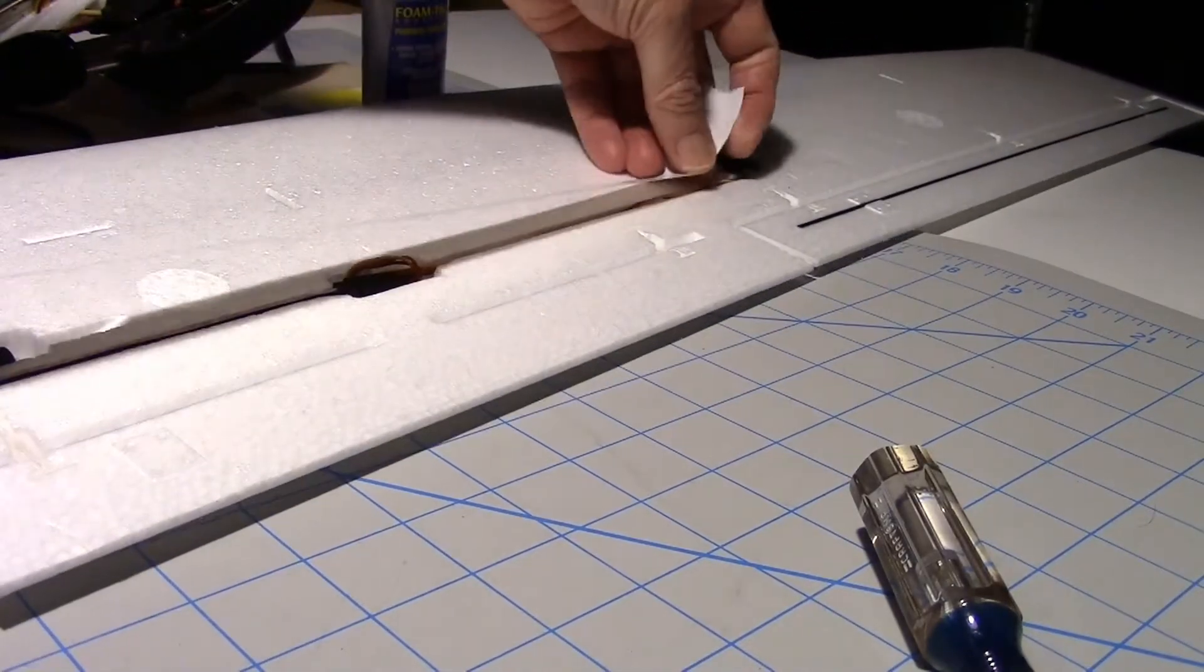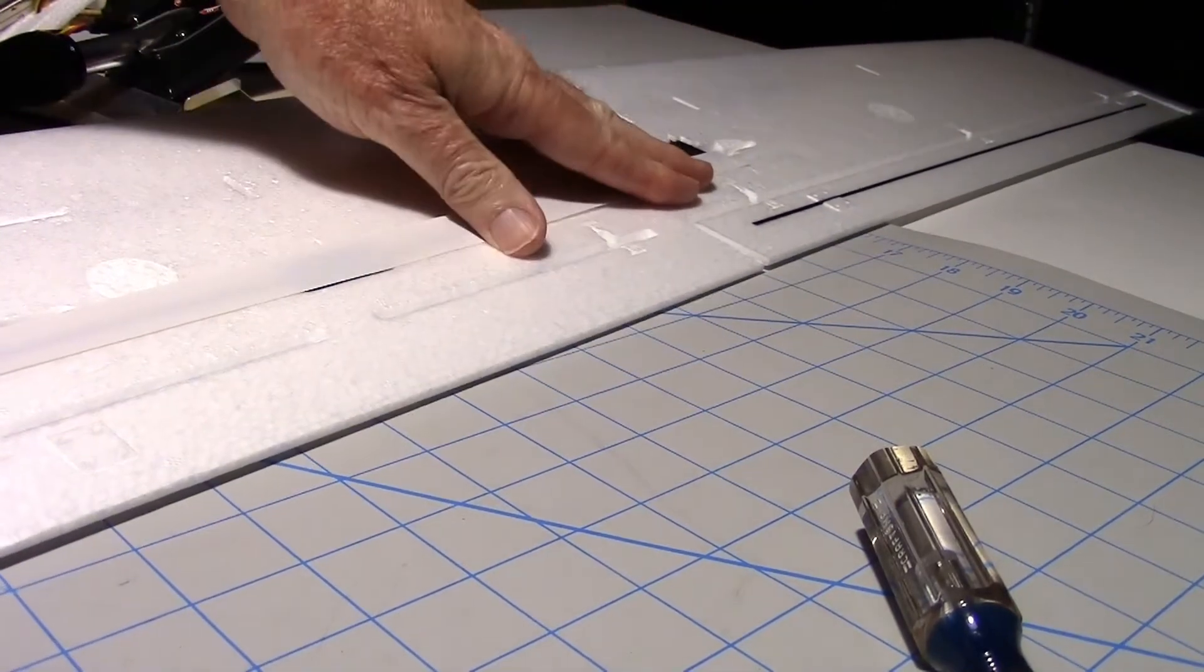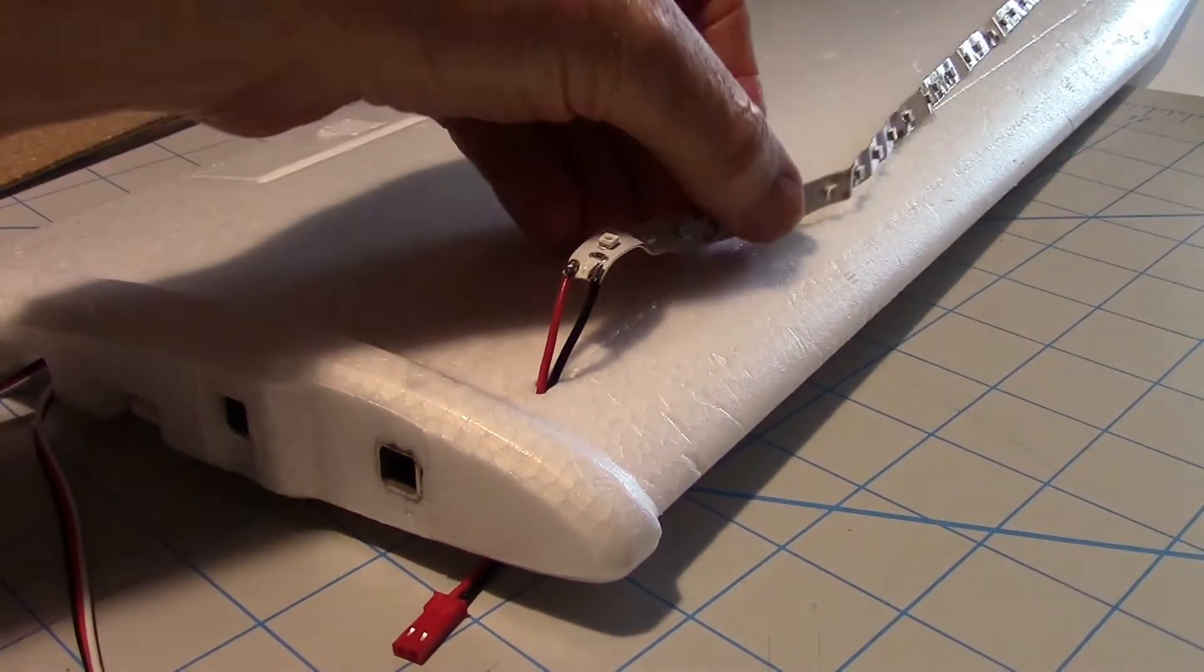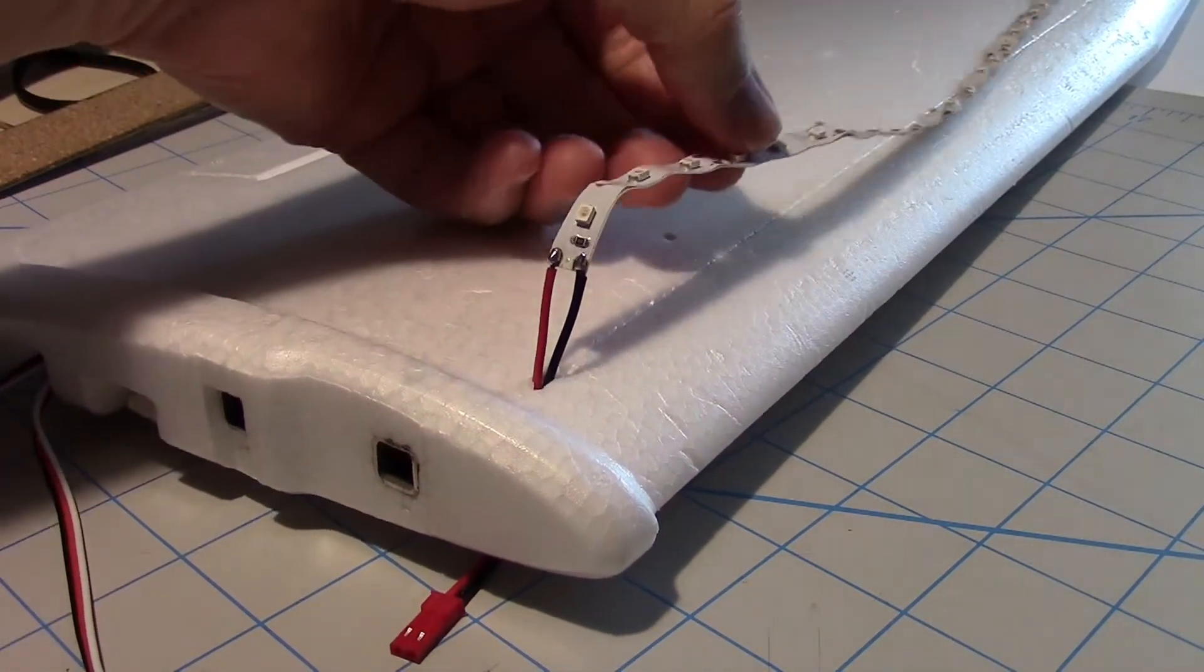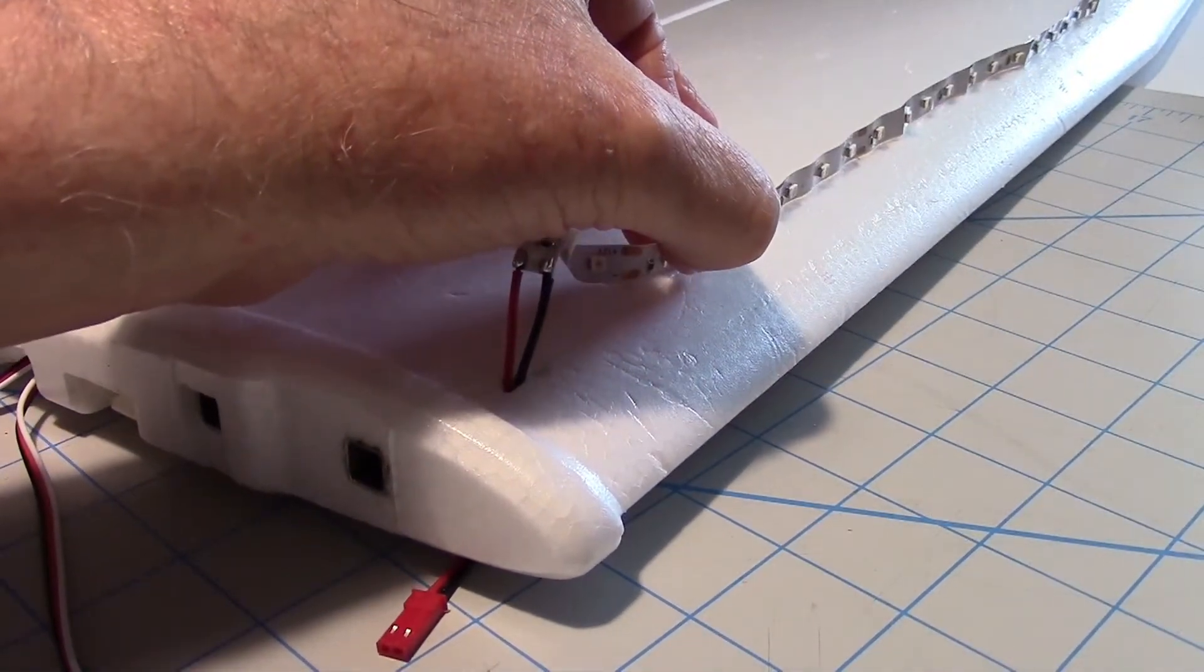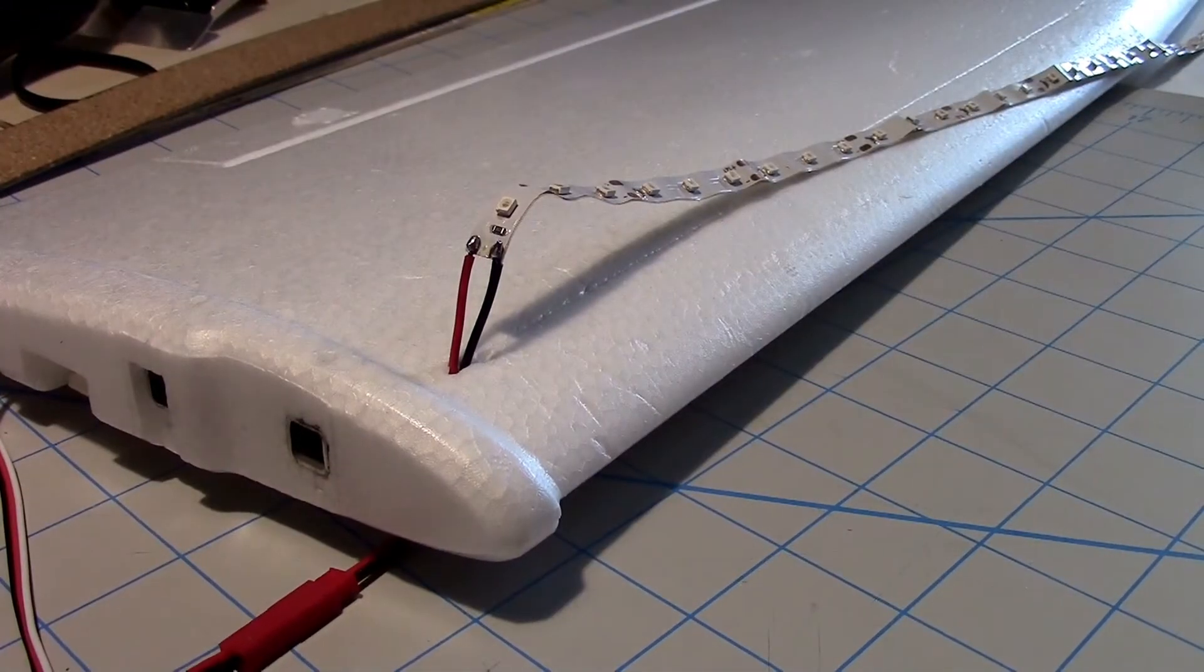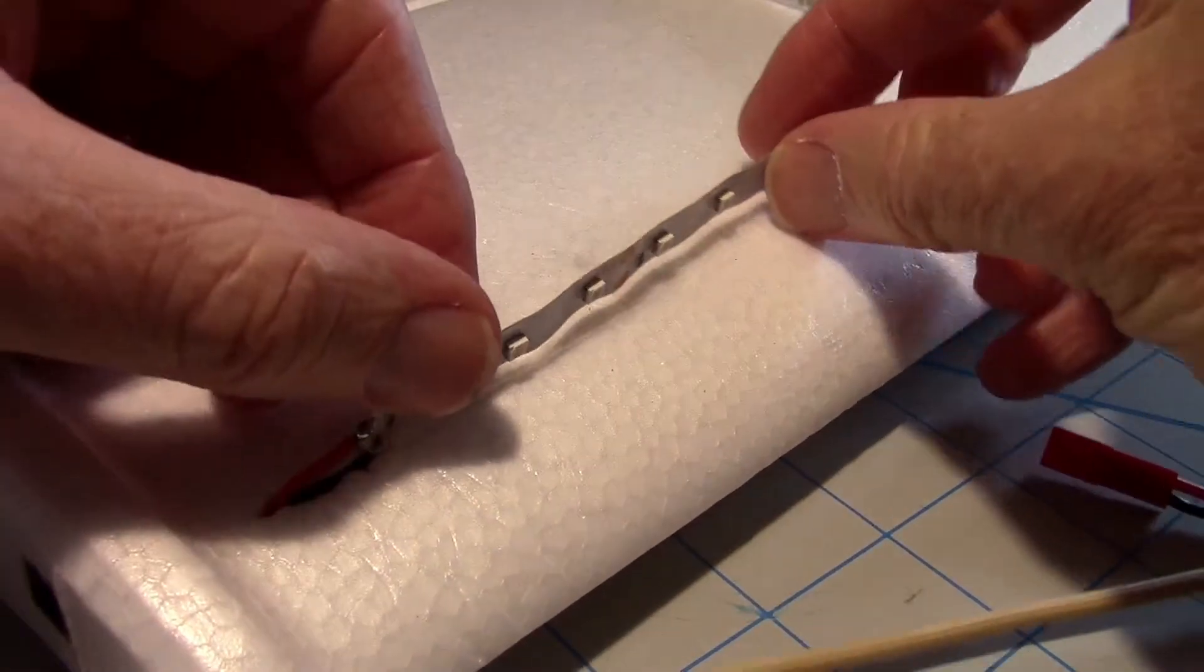I've decided to mount some LEDs on the front edge of the wings. I've cut a slit right along the front edge and I'm going to put these in facing forward, so kind of sideways but facing forward. I'll have a red strip on the left and green strip on the right. Let's test them out.